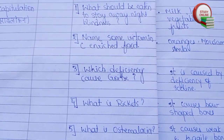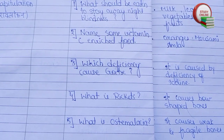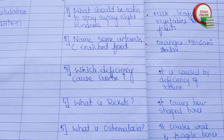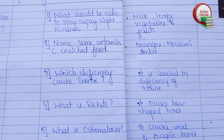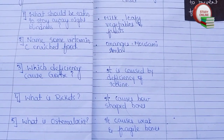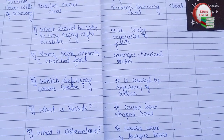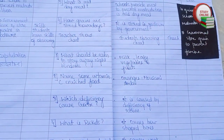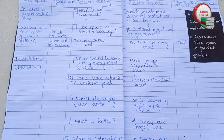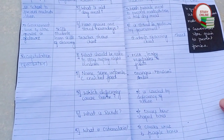Now here you can see the recapitulation section. For that we can ask five questions — you can see the list of questions here, and I have added five questions. Here are the answers that we are basically expecting from students. This is how we make our lesson plan.